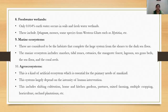The next type is fresh water wetlands. Only 0.014% of Earth's water occurs in soils and as fresh water wetlands. This includes sphagnum mosses and some species such as Myristica.